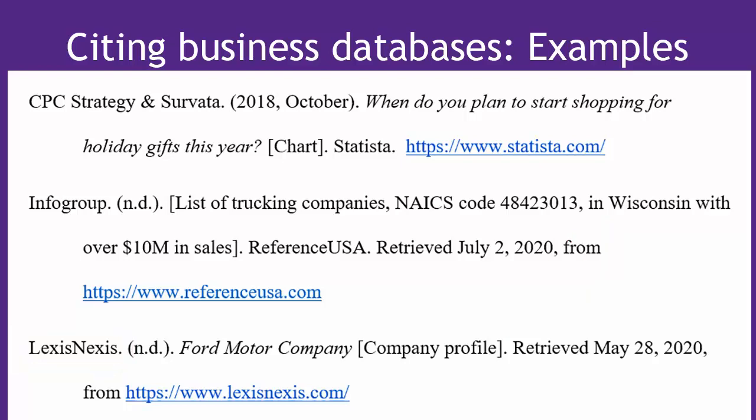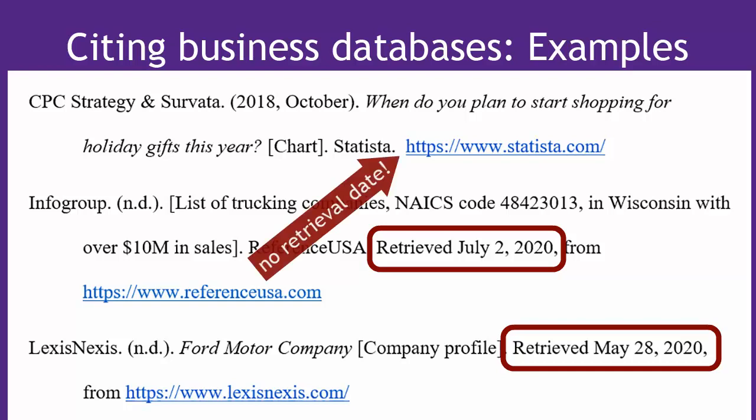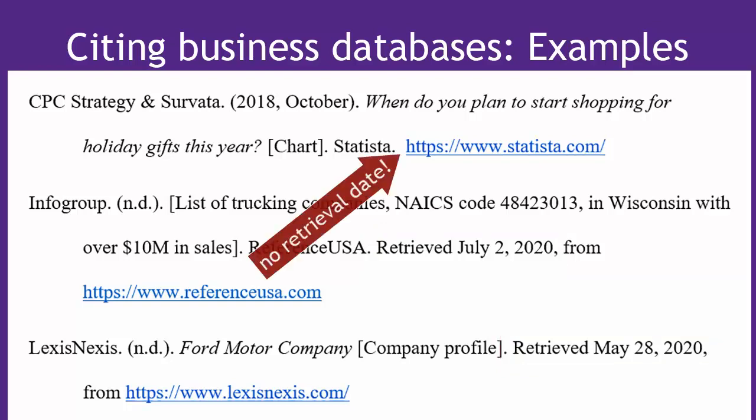You may have another question here: why do two of these have a retrieval date, and the IBISWorld and Statista ones did not? The answer is, for the majority of all sources — not just business — APA requires no retrieval date. APA only asks for a retrieval date when information is likely to change frequently and is unarchived. A good example from the web is social media posts or information like daily stock market updates. In the case of business databases, you have to think about what kind of data are being provided. Both Reference USA and LexisNexis company profiles have financial data updated every 6 to 12 months, so you definitely want to include when you retrieved those. But for IBISWorld and Statista, they are archived as PDFs on the page, so that's relatively permanent.